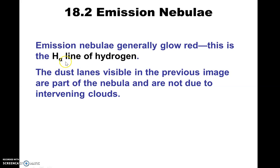They mentioned the H-alpha lines as well — those tend to be red. They are red. The H-alpha lines are, in fact, the red transition — the red light, the transition between N equals 3 to N equals 2.